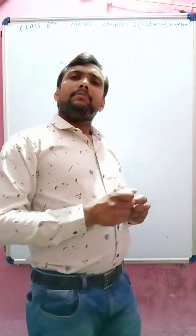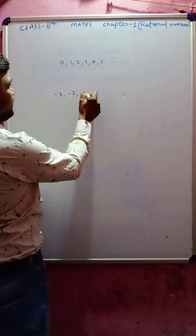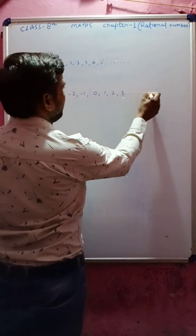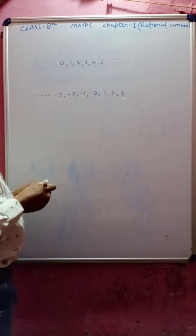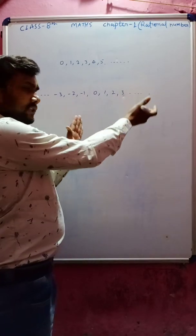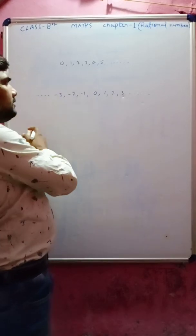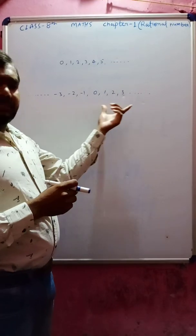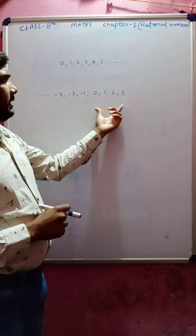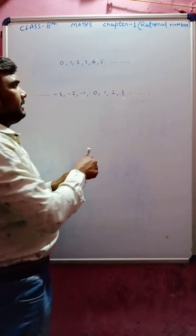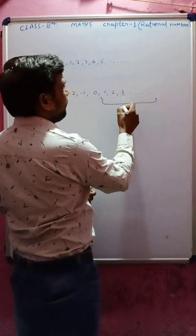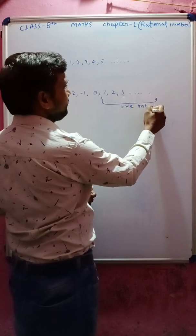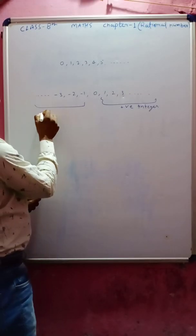Then after that we move to integers. Integers may be positive integers or negative integers — meaning all positive numbers and negative numbers are called integers. For example: ...minus 3, minus 2, minus 1, 0, 1, 2, 3... Towards the right side of zero all are positive numbers and towards the left side of zero all are negative numbers. So these kinds of numbers are called integers.